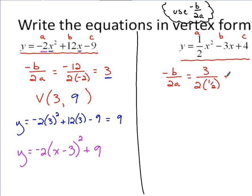2 times 1 half, of course, is 1, so we've got 3 over 1, or just 3. So building our vertex, again, it looks like we've got an x coordinate of 3. A lot of variety in these examples. So figuring out now what y is going to be for this vertex.